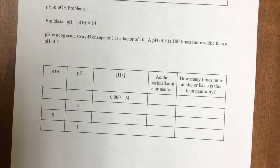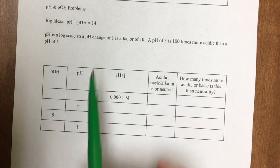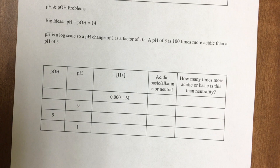This video is about how to solve pH and pOH problems. The big idea is pH plus pOH equals 14, and pH is a log scale.